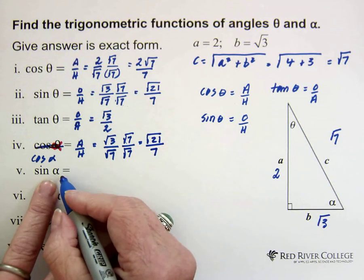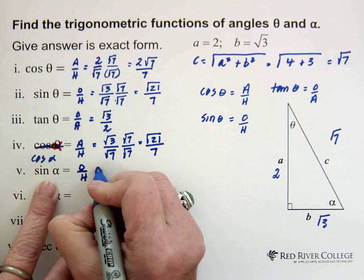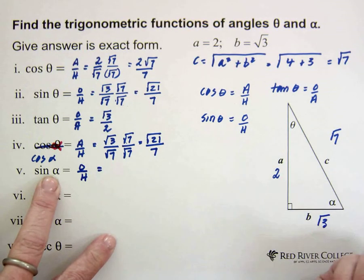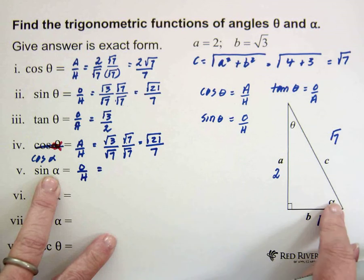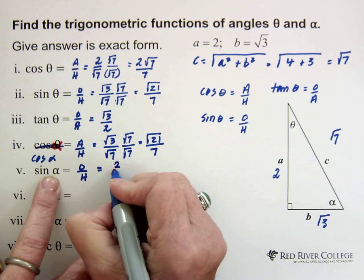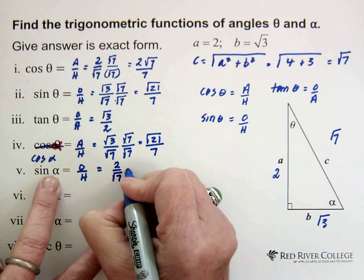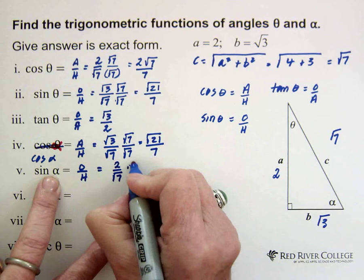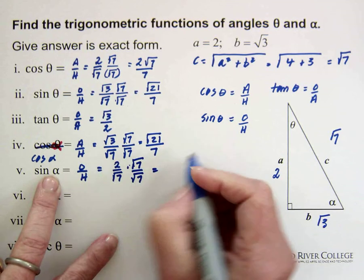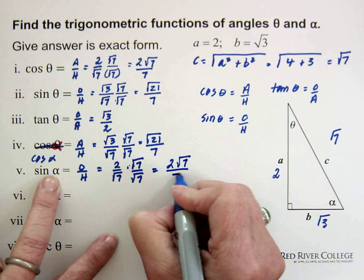The sine of alpha is opposite over hypotenuse, and unfortunately we're going to be over the square root of 7 again. The side opposite alpha is 2. So we have 2 over the square root of 7. We'll walk through the steps to get rid of it — multiplying by the square root of 7 over the square root of 7. 2 times the square root of 7 gives us 2 square root of 7, divided by 7. That's our answer.